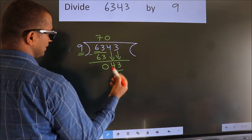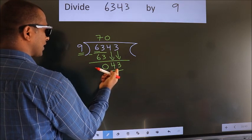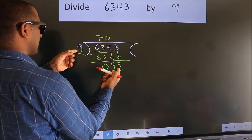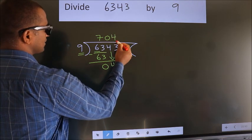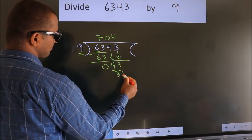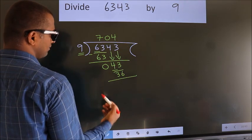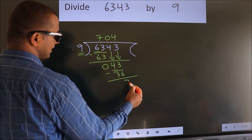So 43. A number close to 43 in 9 table is 9 fours 36. Now we subtract. We get 7.